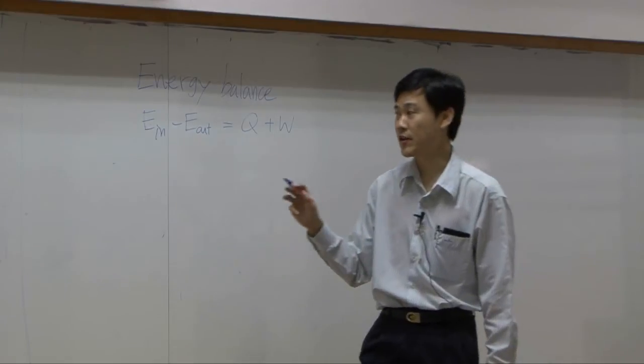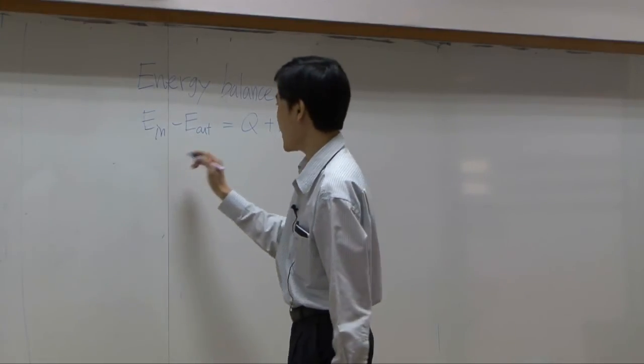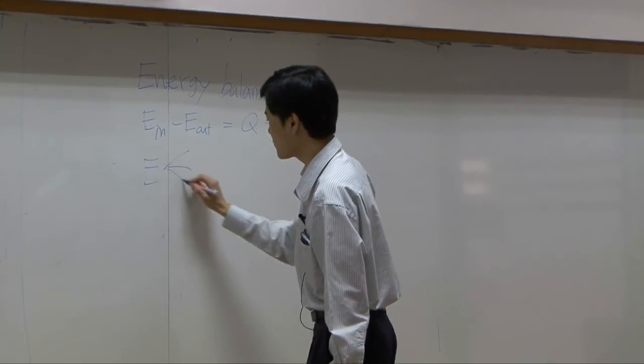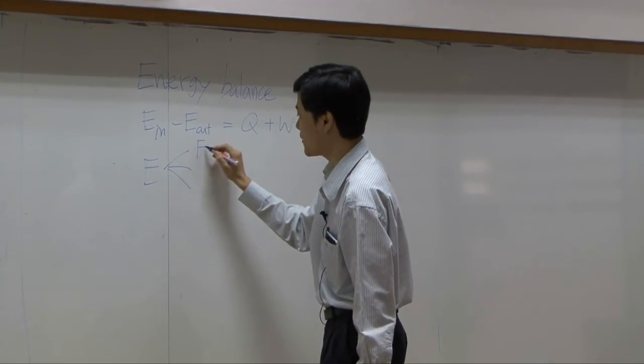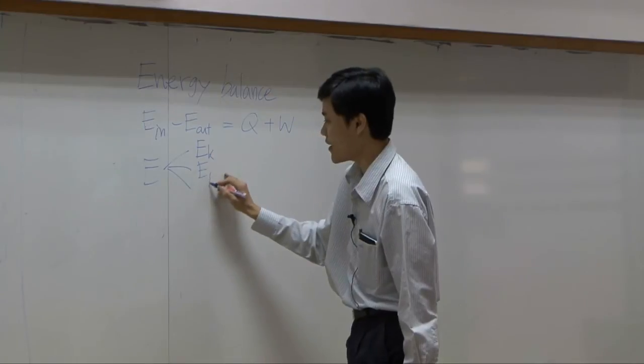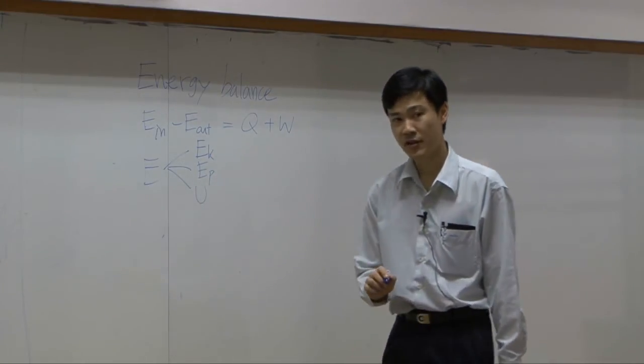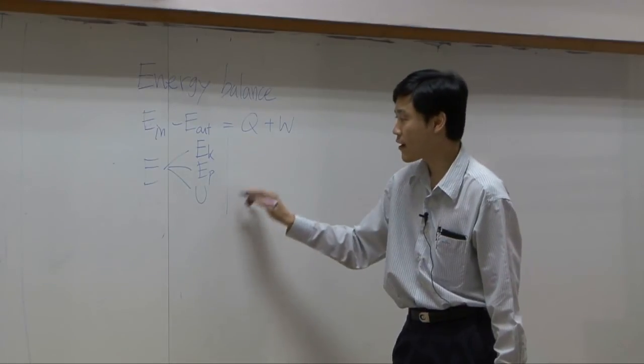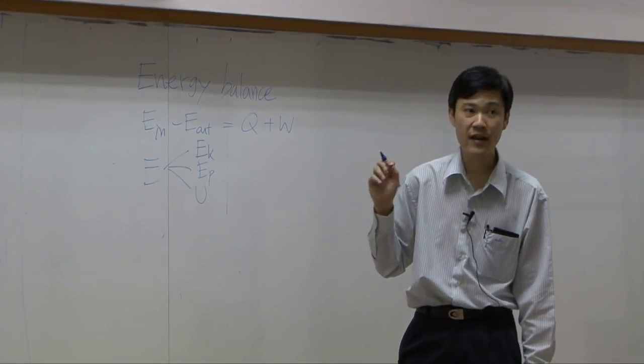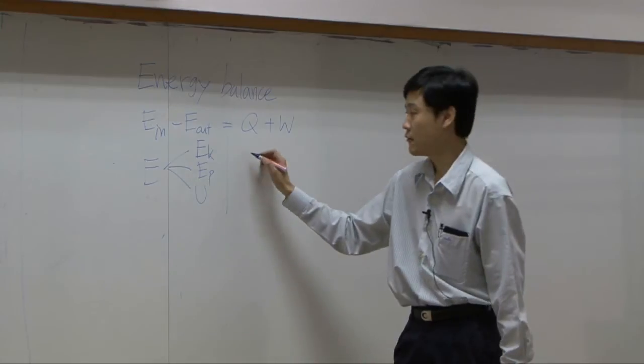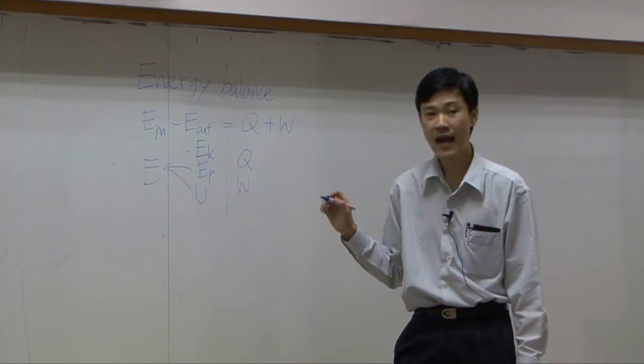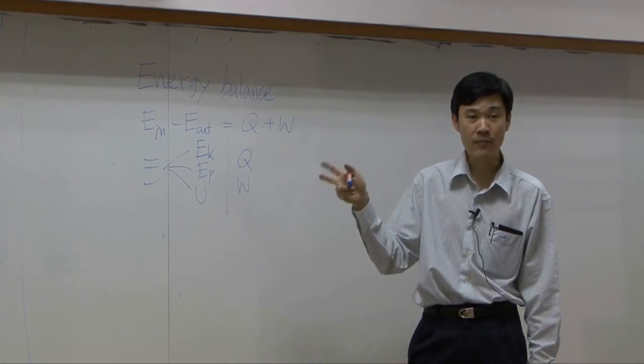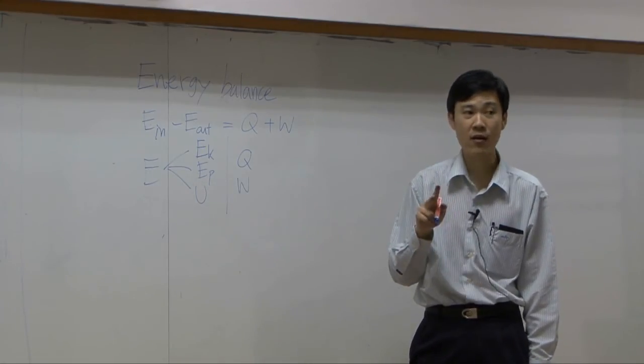We have three forms of energy. Energy here can be in three forms: kinetic energy, potential energy, internal energy. That's three forms of energy. We also incorporated two ways of energy transfer: Q and W. These are two ways of energy transfer from the system without depending on mass.